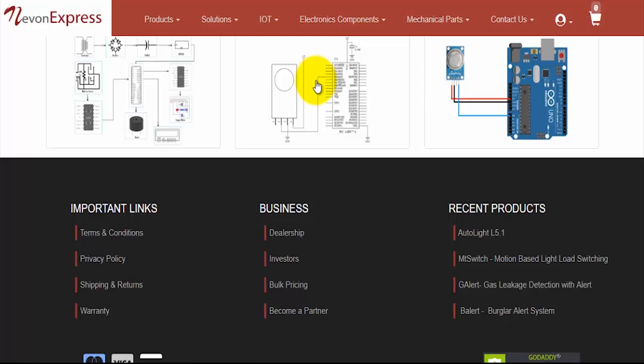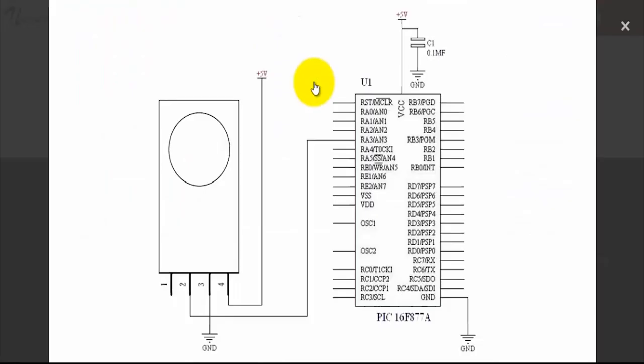Now let's check out the interfacing with PIC16. As you can see, the VCC pin is connected to 5V, ground is connected to ground and D0 pin is connected to AN3 of the PIC16.